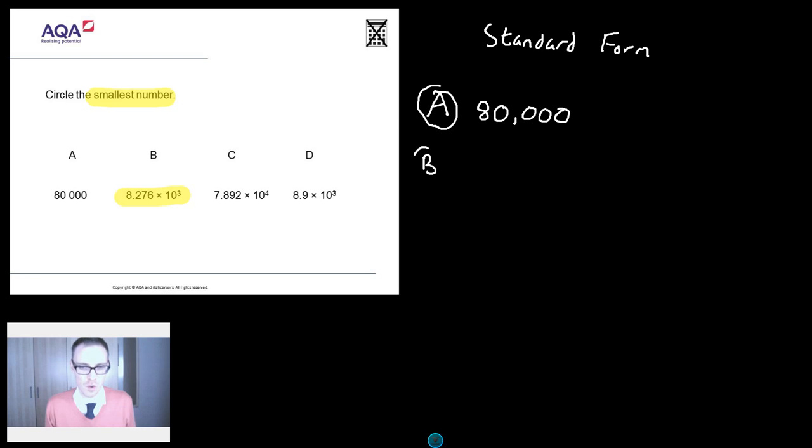B, now B isn't quite so nice. So B is 8.276 times 10 to the 3. Now, I like to, this is my way of doing it, by the way, I like to think of that as meaning times by 10, times by 10, times by 10. Some people like to think of the decimal point moving, I don't mind. But this is just how I think of it.